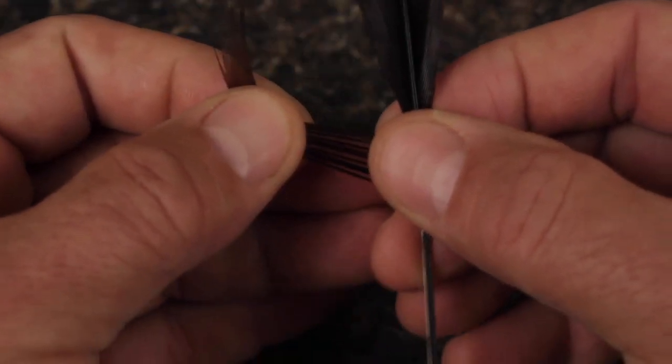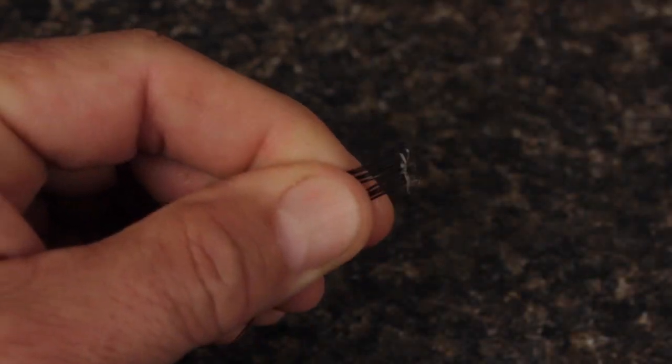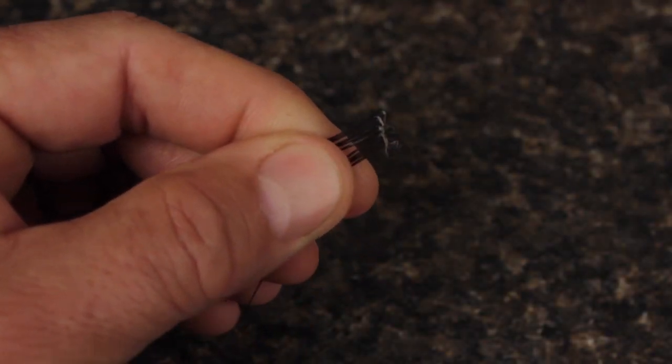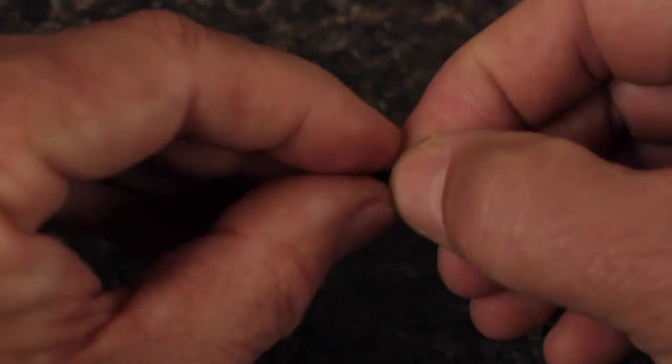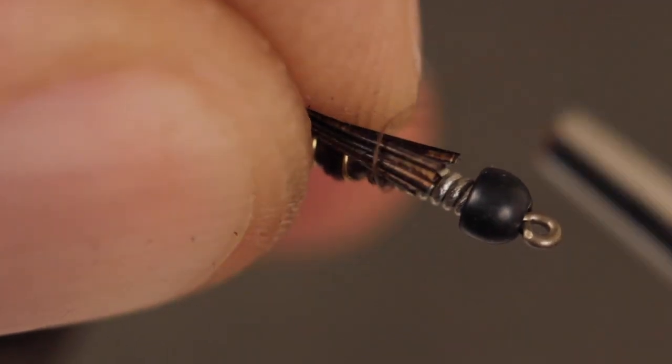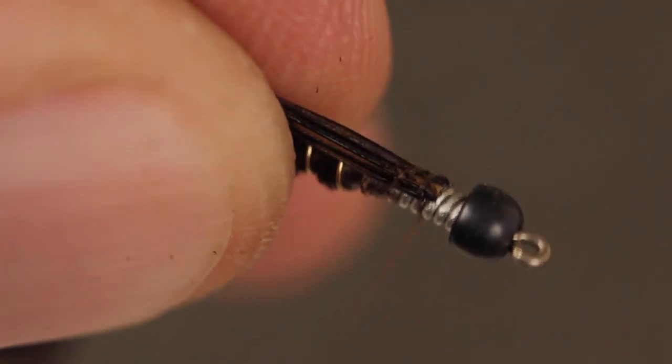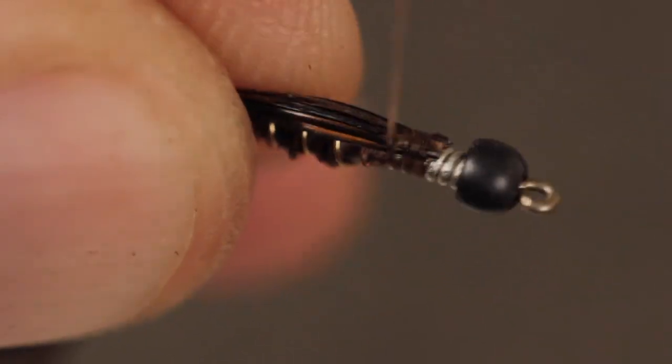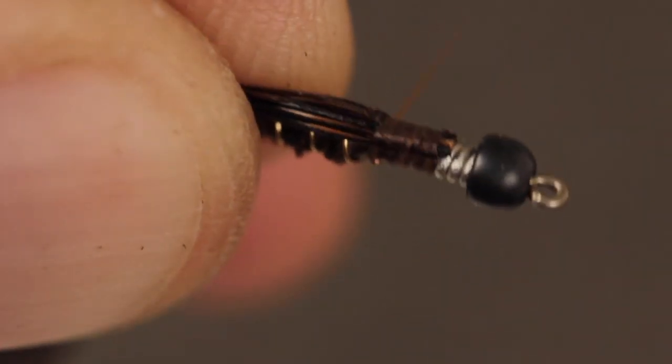From the same dark brown pheasant tail feather this time strip eight to ten fibers free from the stem. You don't need to worry about keeping the tips aligned. Snip the curlies free from the butt ends and then secure those butt ends to the top of the hook shank just behind the eye. Use your thumb to flatten them out and continue taking thread wraps rearward to the abdomen of the fly.